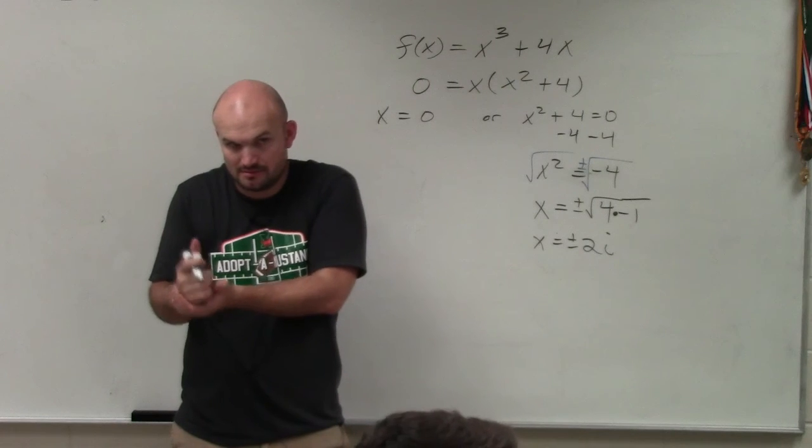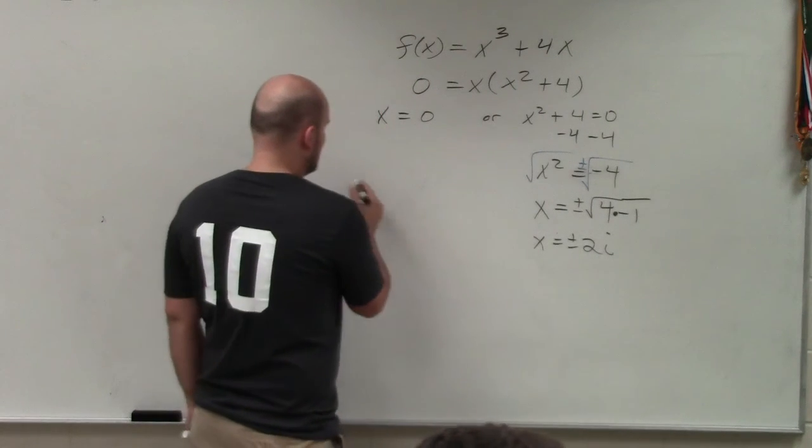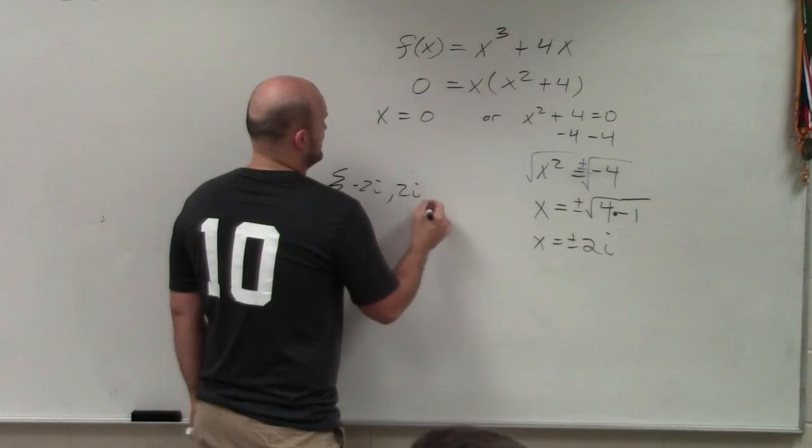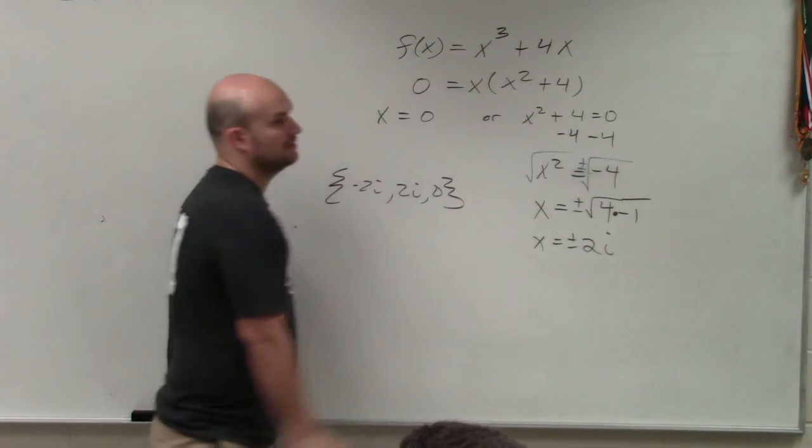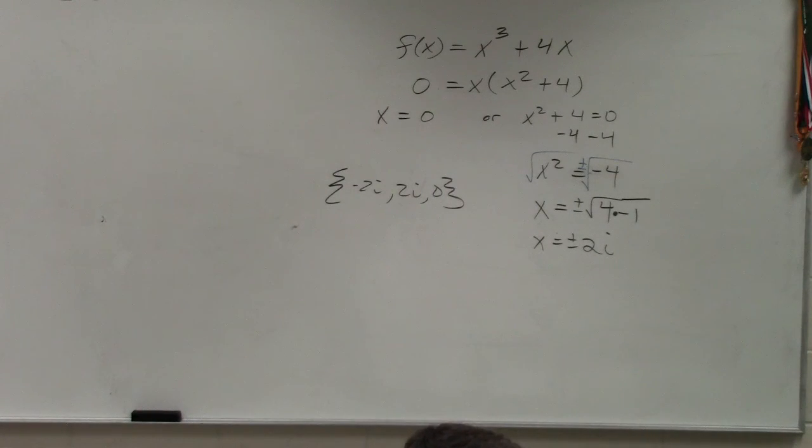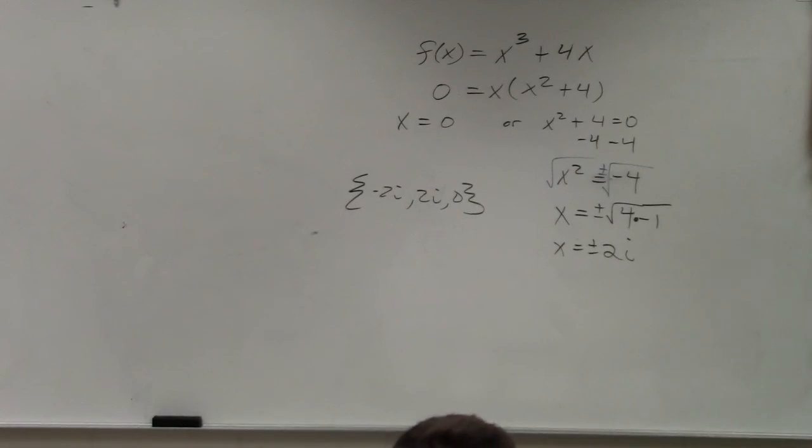So your zero set would be negative 2i, positive 2i, and 0. All right. I think we might be all right.